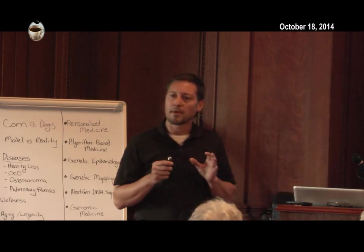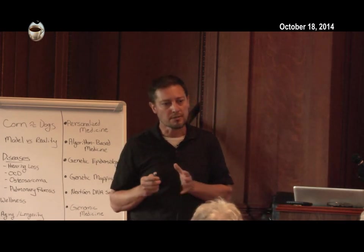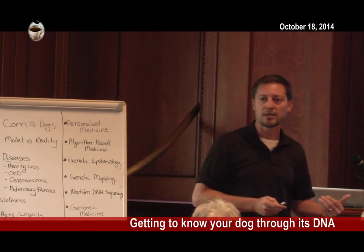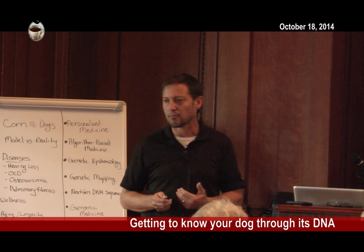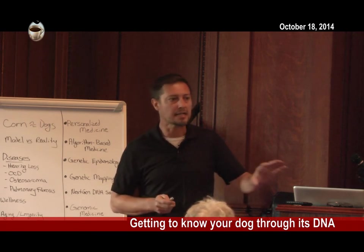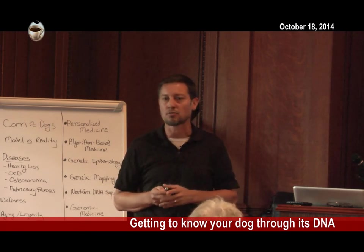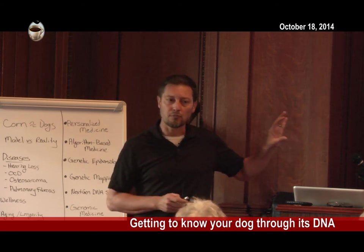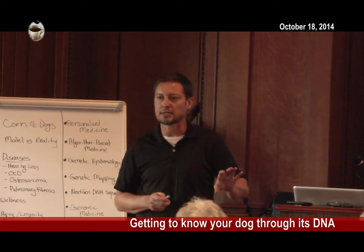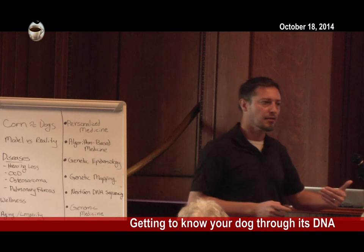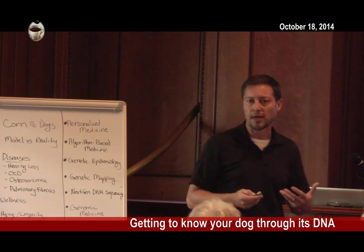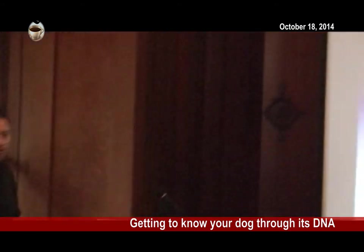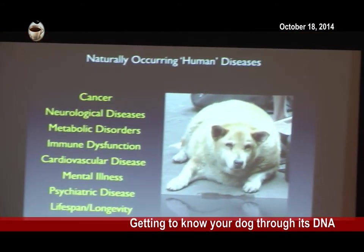So far, I've told you the dog is a model for evolutionary biology — we can understand how gene variation has contributed to radically different sizes, shapes, coat colors, and textures. We can also use behavioral differences across breeds to access the mechanics of the mind, how this is set up genetically. The last part of the introduction is that the dog is also a medical model.